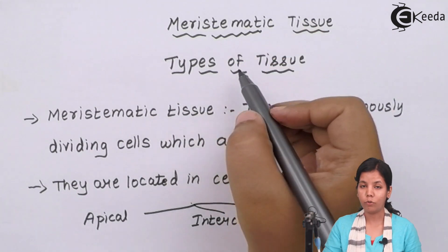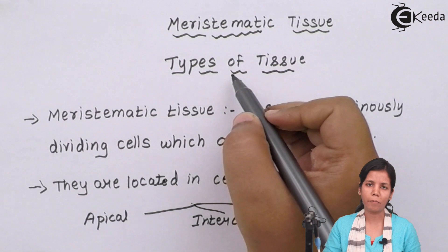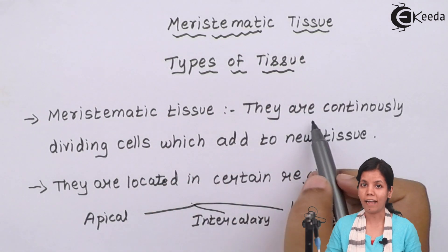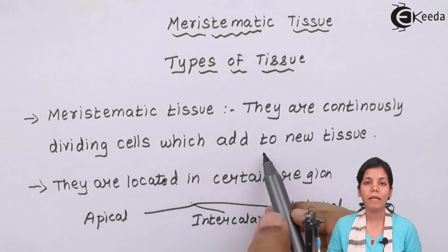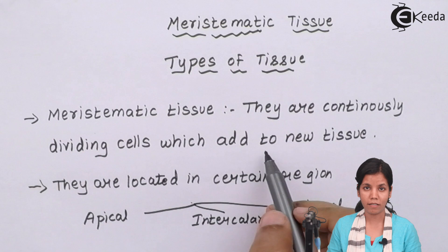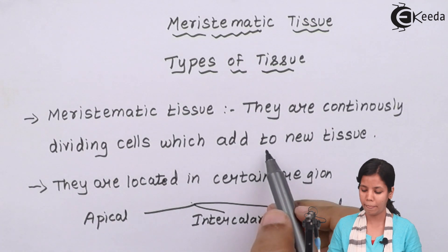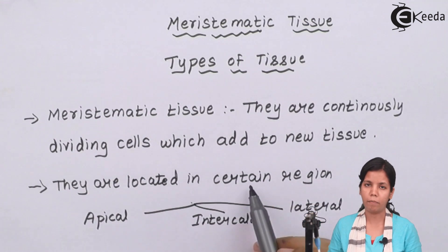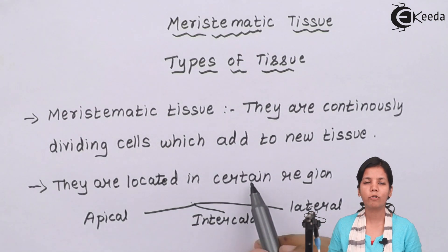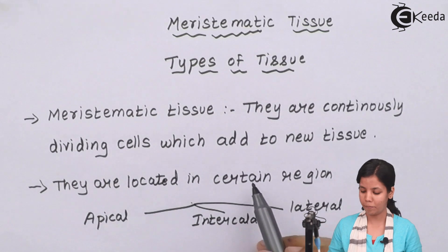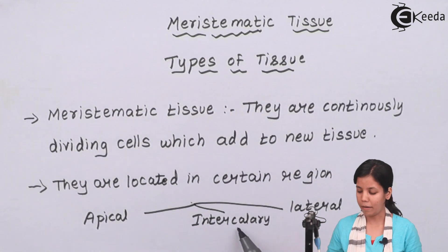Meristematic tissues are a type of tissue that consists of continuously dividing cells, which add new tissues to the plant. They help the plant form different kinds of tissue like simple tissue, complex tissue, parenchyma, colenchyma, sclerenchyma, xylem, and phloem. These tissues are located in different regions of the plant, and according to their location, meristematic tissues are divided into three types: apical meristem, intercalary meristem, and lateral meristem.